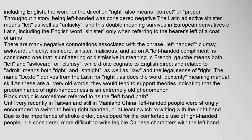Throughout history, being left-handed was considered negative. The Latin adjective sinister means 'left' as well as 'unlucky,' and this double meaning survives in European derivatives of Latin, including the English word 'sinister.' There are many negative connotations associated with the phrase 'left-handed': clumsy, awkward, unlucky, insincere, sinister, malicious, and so on. A left-handed compliment is considered one that is unflattering or dismissive. In French, gauche means both 'left' and 'awkward or clumsy,' while droit means both 'right' and 'straight,' as well as 'law' and the legal sense of 'right.' The name dexter derives from the Latin for 'right,' as does the word dexterity.